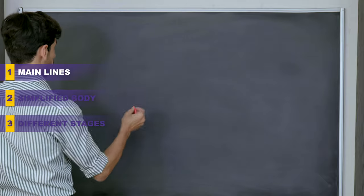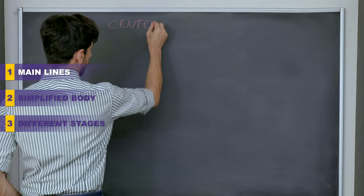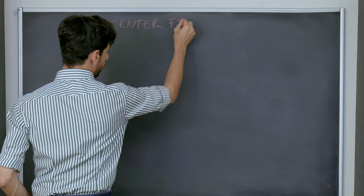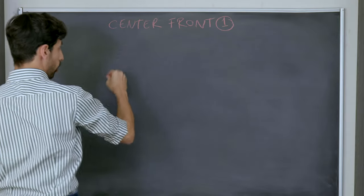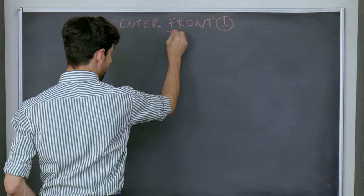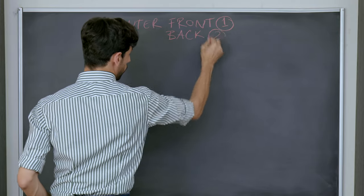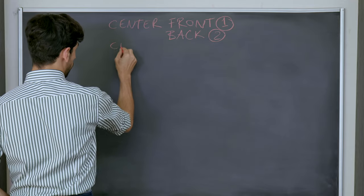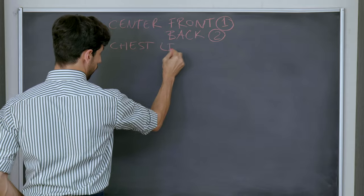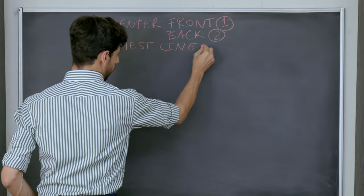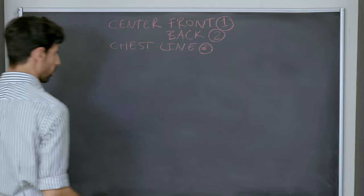The first construction line is called the center front. That's number one. The second one is called the center back. That's number two. And the third one is called the chest line. And that's number three. Now, where are these located on the body and on the pattern?